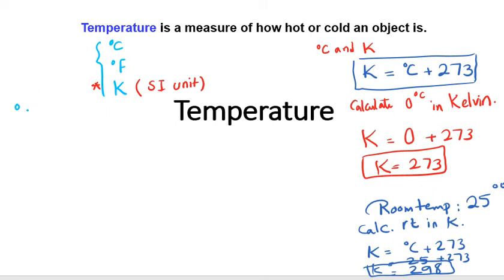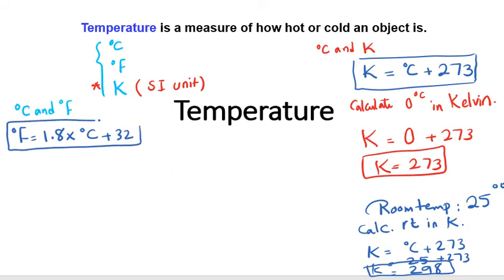For the conversion between degrees Celsius and degrees Fahrenheit, the equation is: °F = 1.8 × °C + 32. You need to memorize these two equations — they will save you time when solving problems.